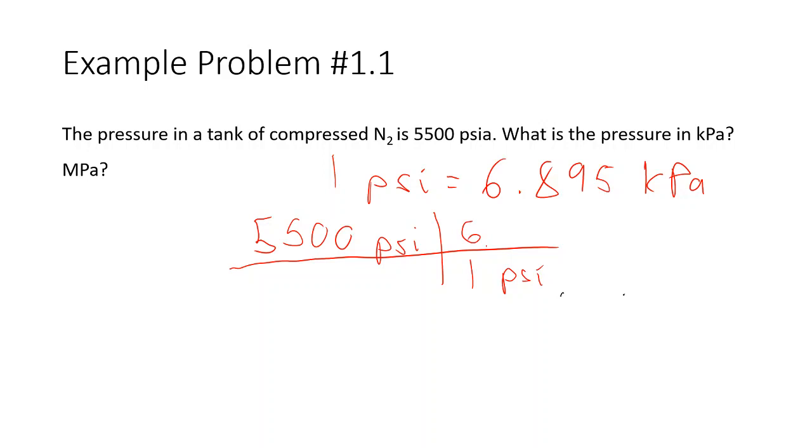And then I'm putting 6.895 kPa in the numerator so that I can find what my kPa is. So then if I multiply 5500 times 6.895 kPa, I find my pressure in kilopascals, and that number is going to be 37,923 kPa.